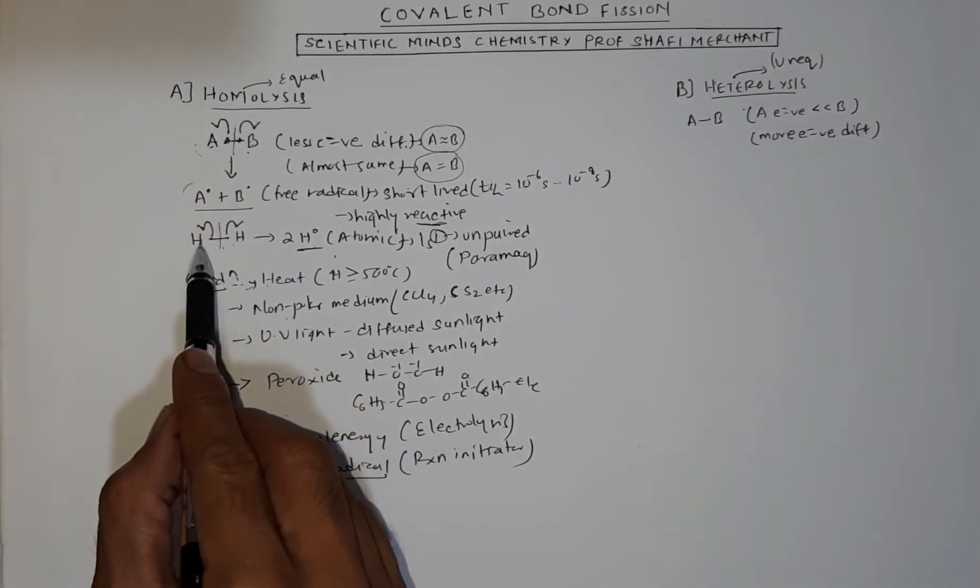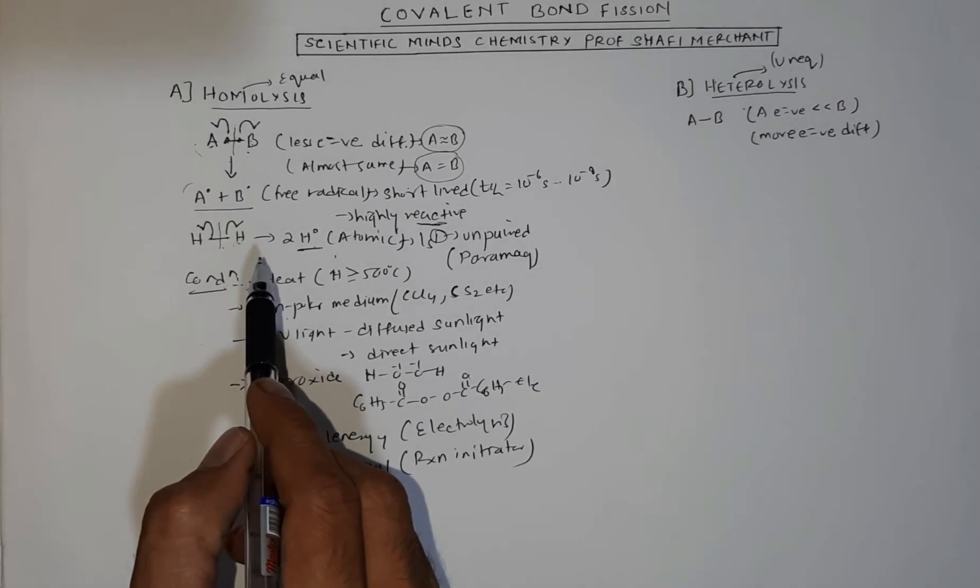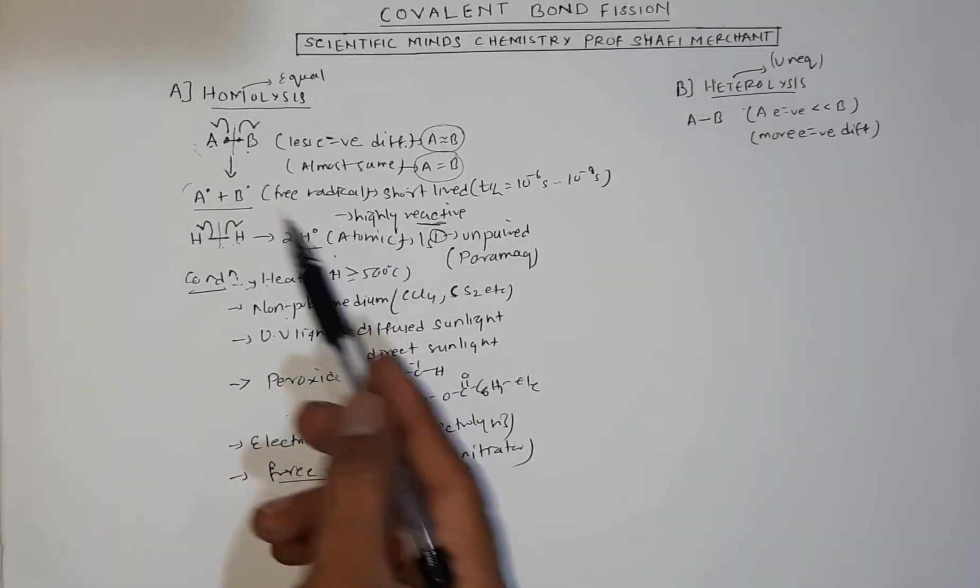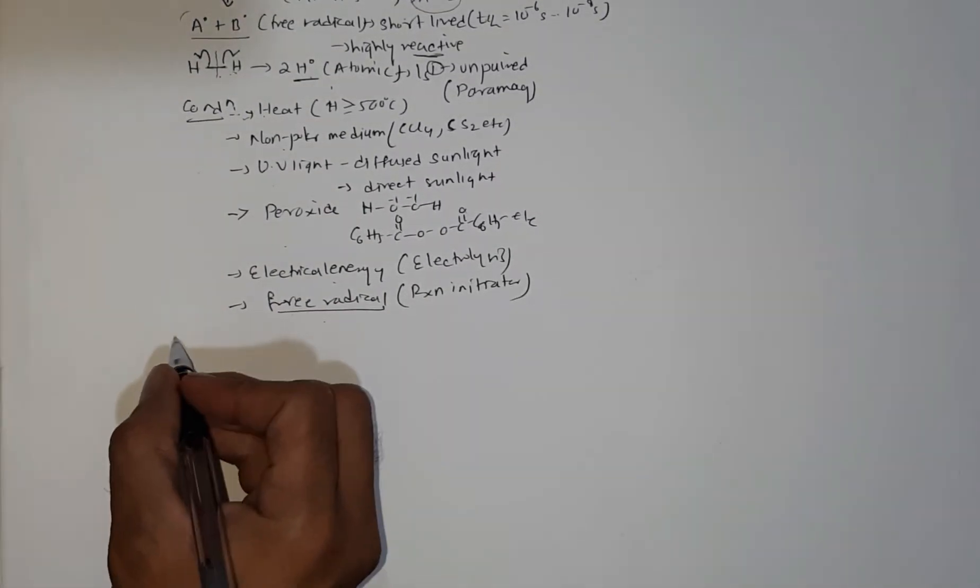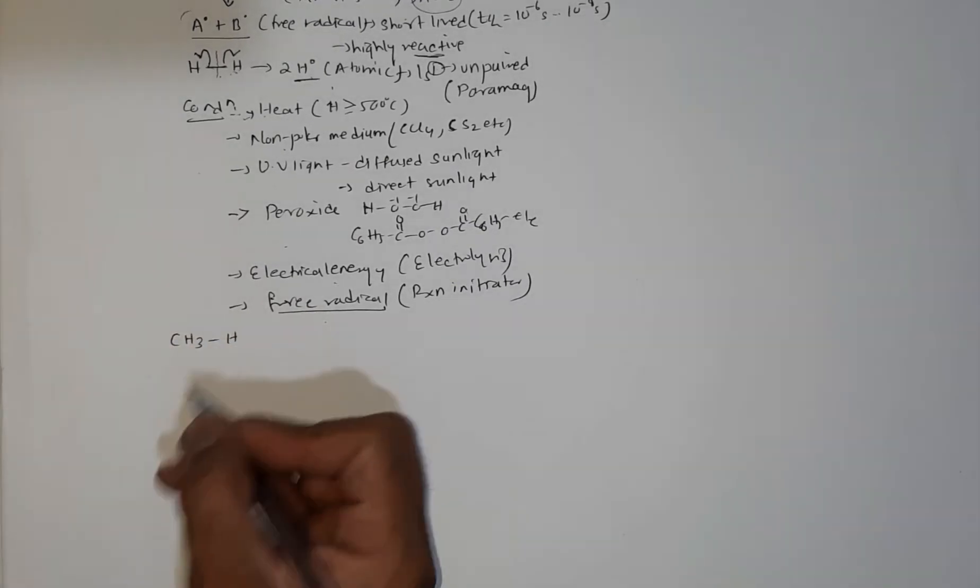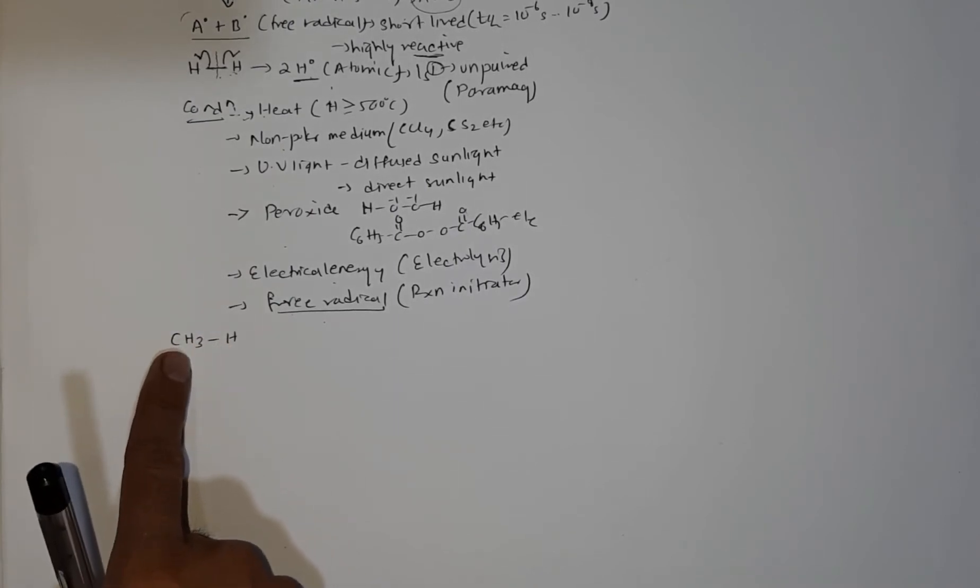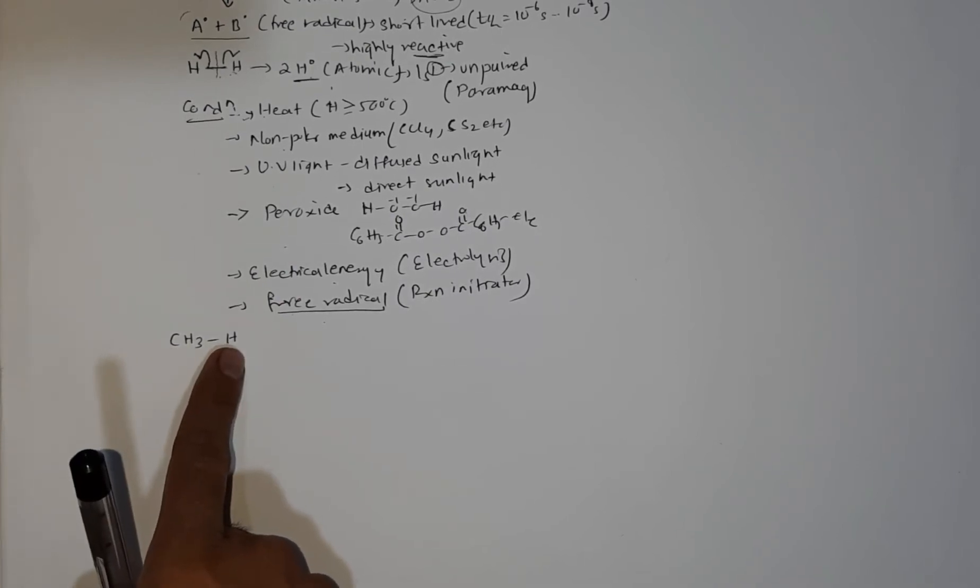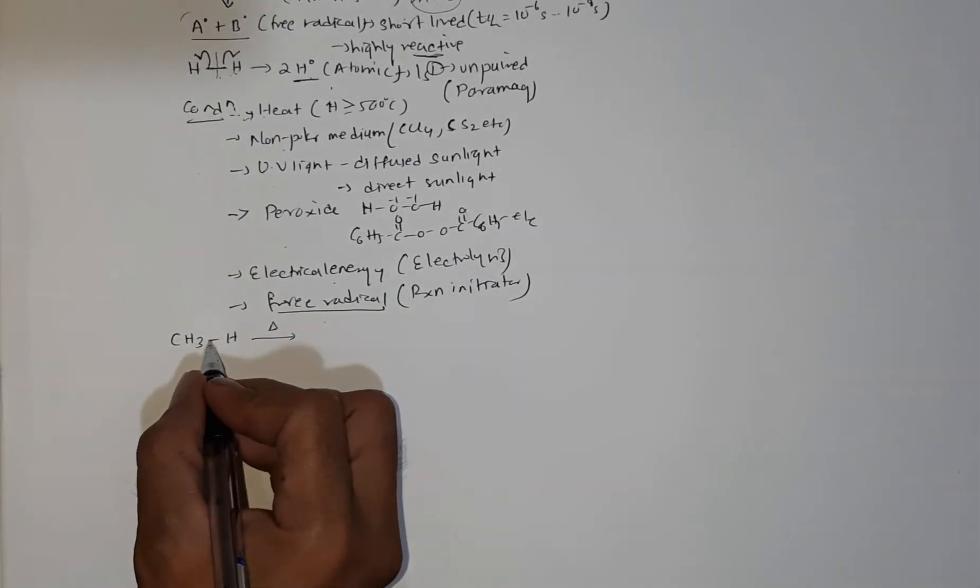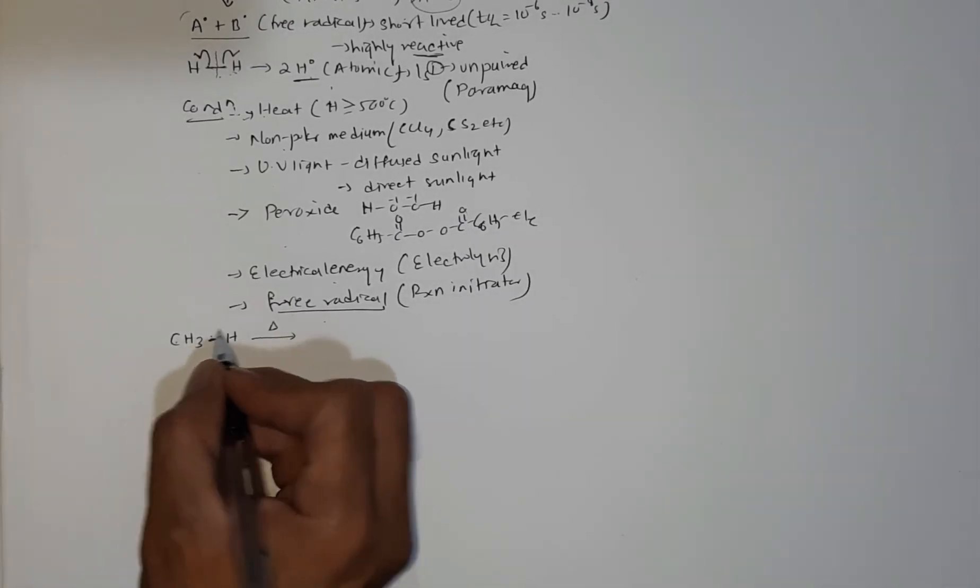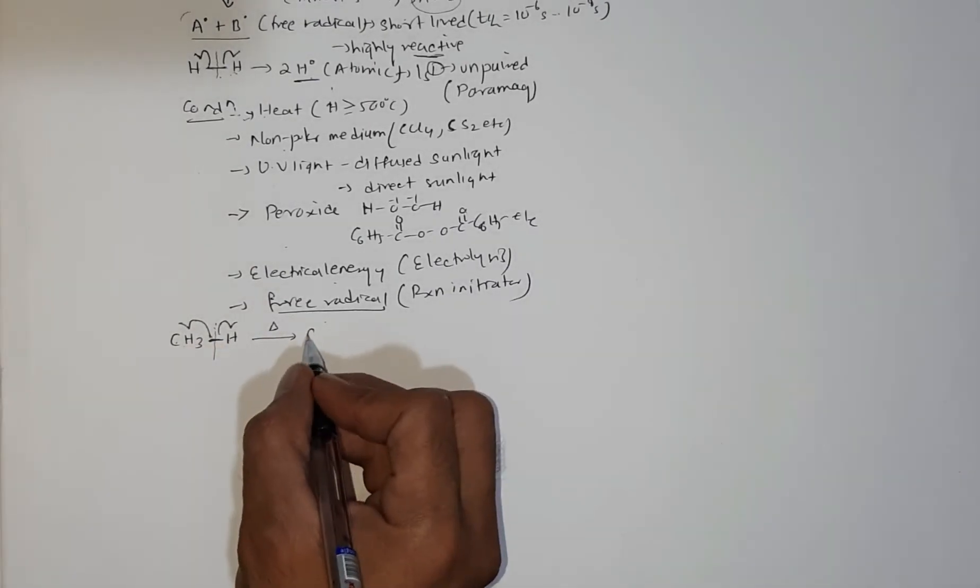Important thing for homolysis: the atoms in a bond should have very less electronegativity difference or should be the same. Let's take one more example of free radicals. For example, methane. In methane, carbon and hydrogen have very less electronegativity difference - carbon is about 2.4 and hydrogen is 2.2. If I heat it at high temperature, this bond between carbon and hydrogen will break equally since they have very less electronegativity difference. One electron goes to carbon, one goes to hydrogen.